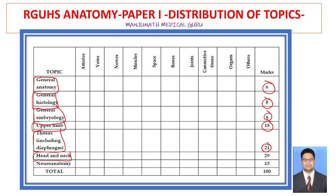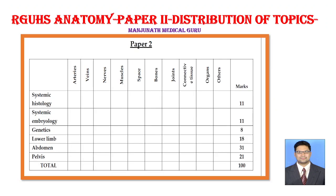Head and neck area carries 29 marks, neuroanatomy 13 marks. You must know the distribution of topics and the weightage of marks to get good marks in the exam. In paper 1, the head and neck area carries the highest marks at 29, followed by thorax at 21.